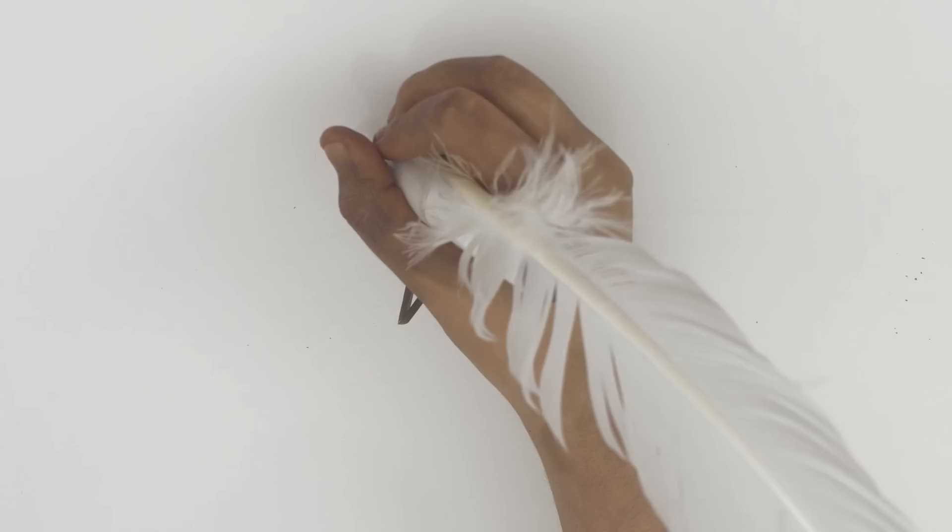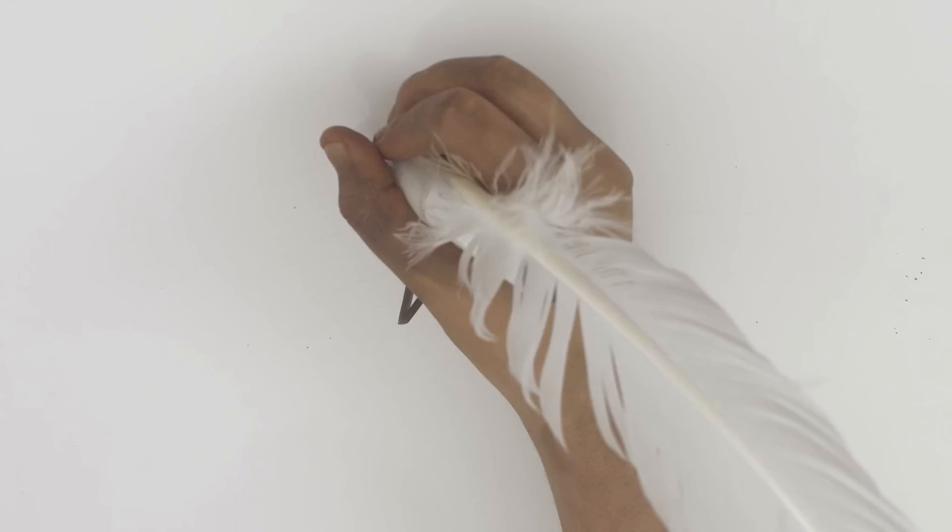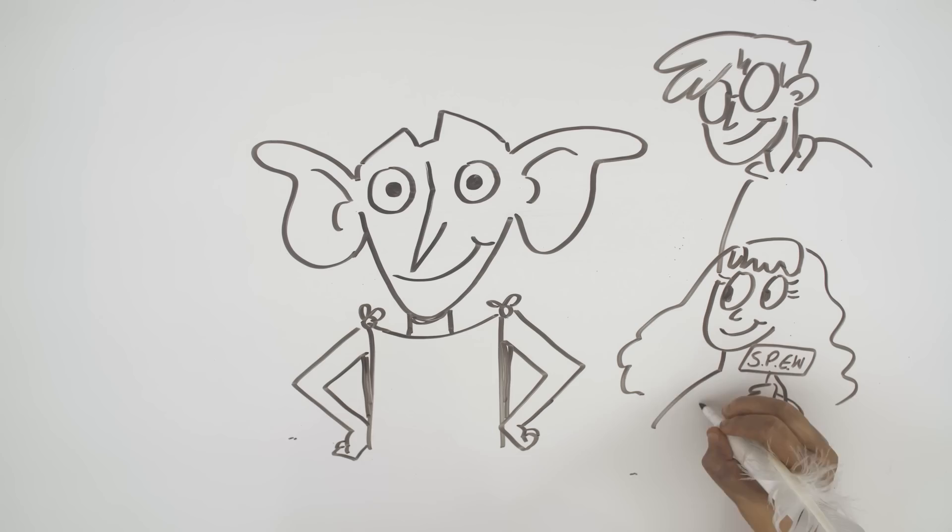Now Dobby was a free house elf and Dobby loved his friends. Dobby fought for what was right together till the end.